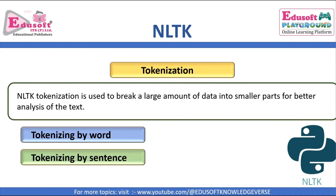NLTK tokenization is used to break a large amount of data into smaller parts for better analysis of the text. Tokenization is the initial step in natural language processing. It is the process of breaking up text into smaller pieces which are known as tokens. It is the initial step for performing further operations like stemming, lemmatization, language translation, chatbot creation, text classification, and text analysis.